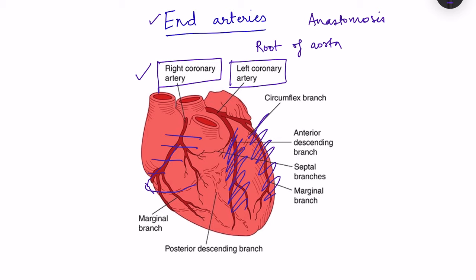Restricting ourselves to physiology only: these major arteries are end arteries, meaning there is hardly any anastomosis between them. The end of these arteries supplies a particular area with no overlap. So if a particular coronary artery is blocked, the area supplied by that artery will have decreased blood flow.